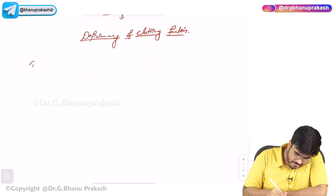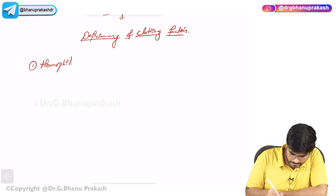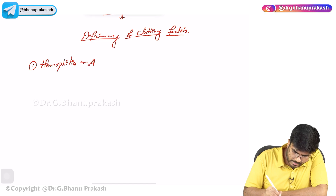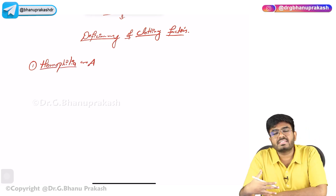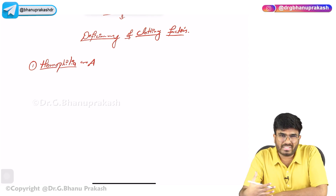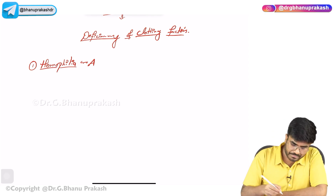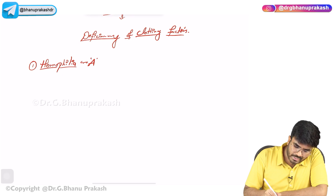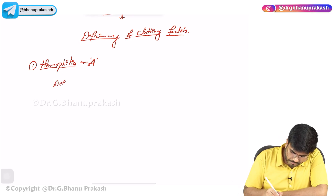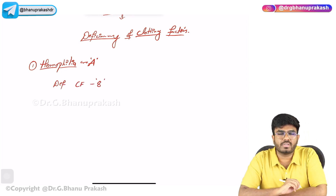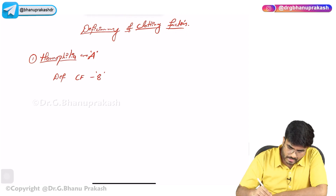The first disorder is Hemophilia A. 'Haemo' means blood loving — these patients are going to bleed more. A is something similar to 8, so it's a deficiency of clotting factor number 8. Clotting factor number 8 deficiency is going to cause Hemophilia A.